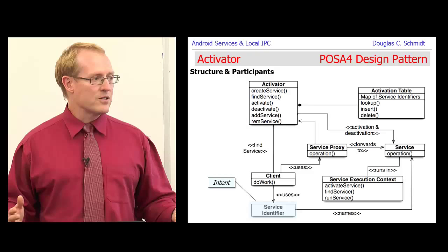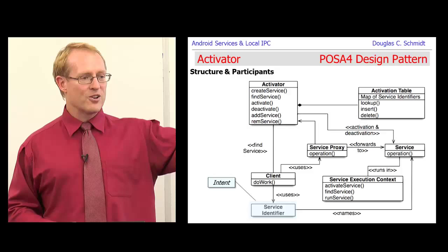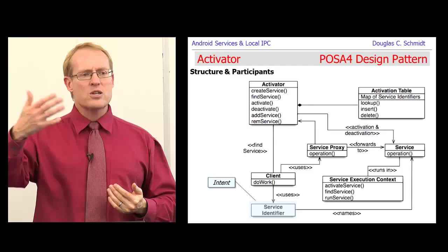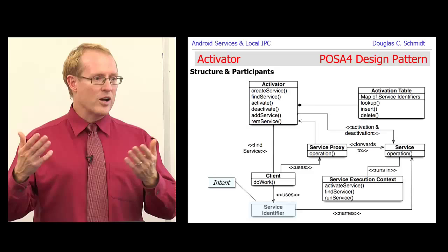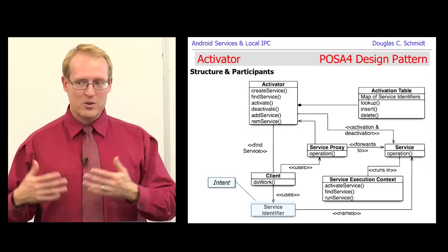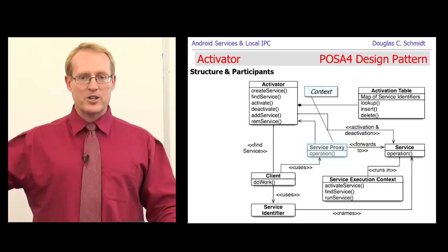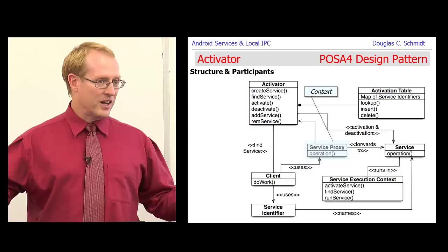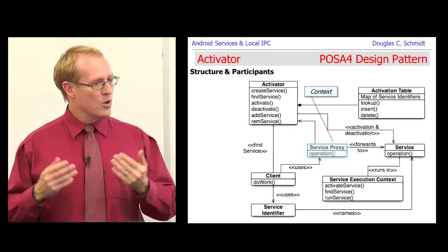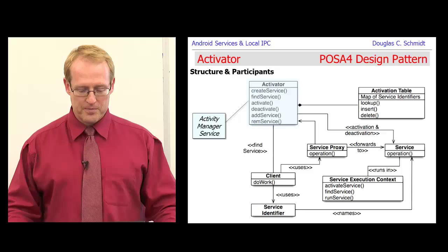With explicit intents you say please run this particular class file; with implicit intents you say here's an action I want performed, or here's some data — go find someone who knows how to handle a URL starting with maps.google.com. Then there's the service proxy, which is what the client sees in order to do an operation that will eventually cause a service to start up and run. In Android, that's typically done by the context, with operations like bind service or start service done through the context as the service proxy.